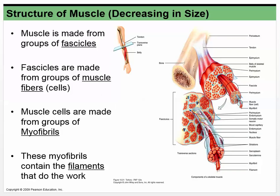When we talk about a muscle, we're talking about the whole muscle — for example, the entire bicep in your arm. It's broken down into smaller units called fascicles. If the entire muscle is the whole structure, then it has a number of fascicles inside it. A fascicle is a group of muscle fibers, and remember muscle fibers means muscle cells.